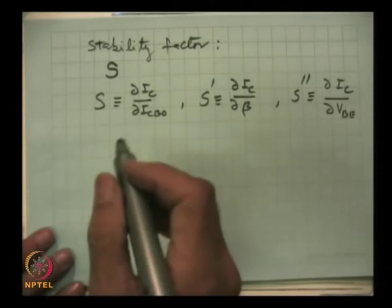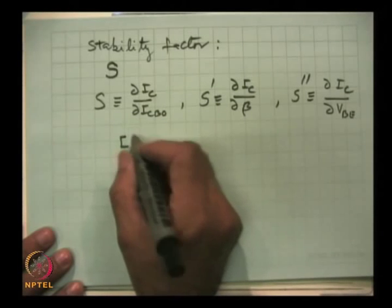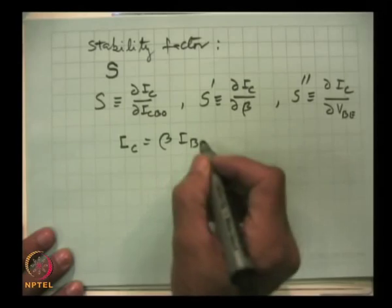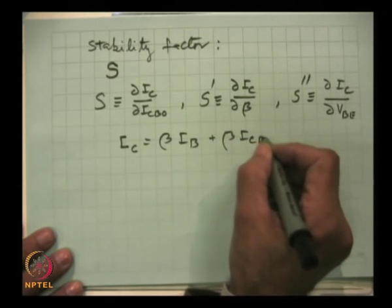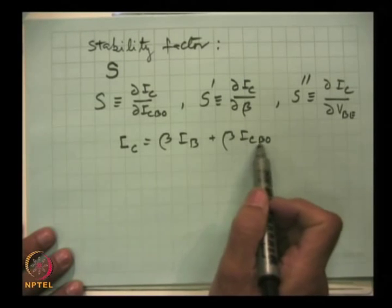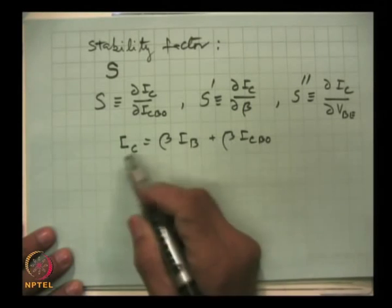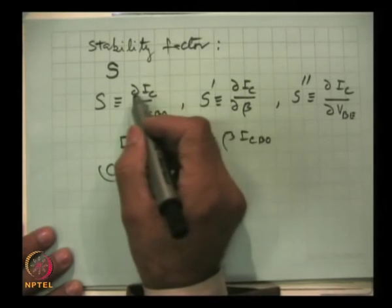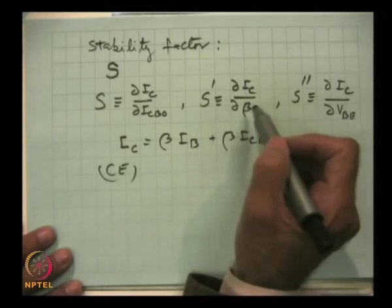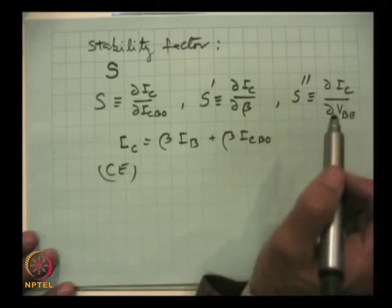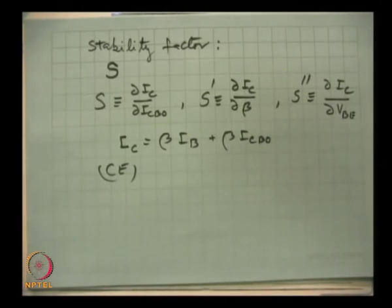Recall that I_C = β × I_B + β × I_CBO. If I_CBO varies, it is multiplied by beta, making this a significant variation in a common emitter circuit. Similarly, if beta changes, the current may change, and if V_BE changes, the current also changes. An important statement: if a circuit shows stability against one kind of variation, it will take care of variations due to other causes as well.